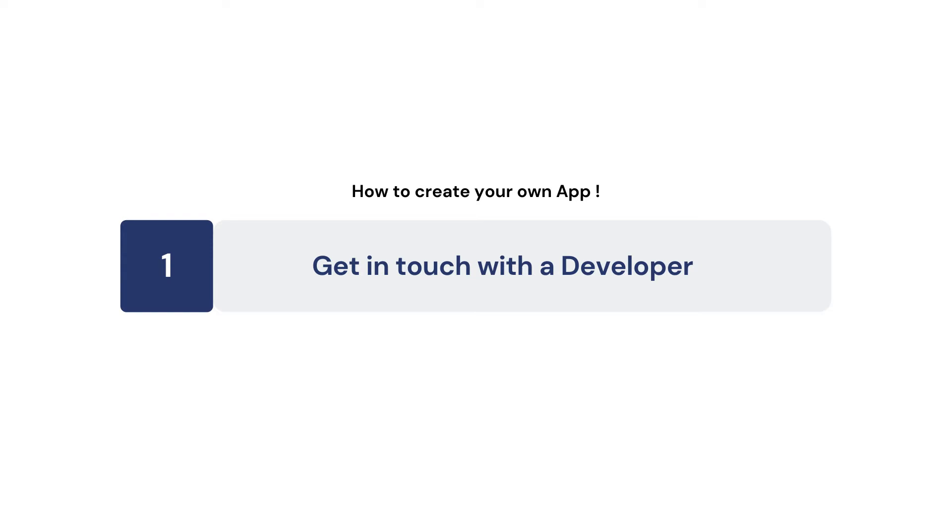Option number one — and I would strongly suggest this option — is to get in touch with a developer. I know this sounds obvious, but many of us do not take this option. What we generally do is, if I have an app idea, I think let me start learning it myself. Maybe I'm a software person and so I say, I already know one technology, let me learn this too.